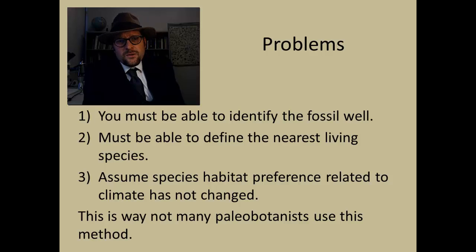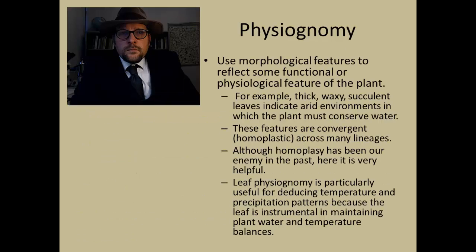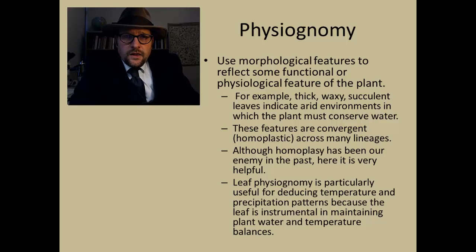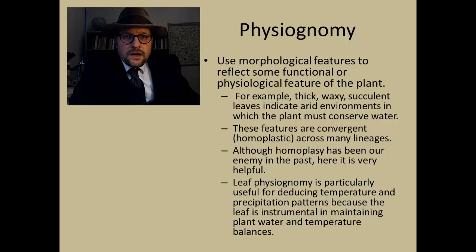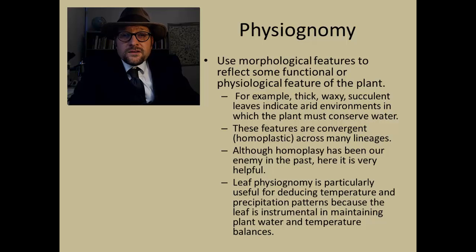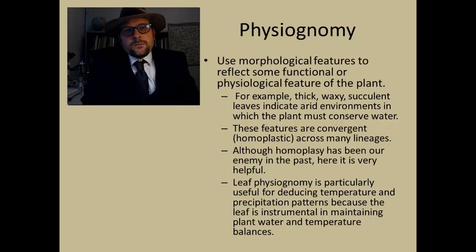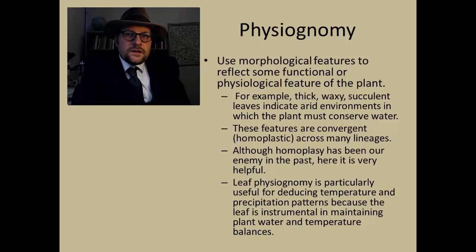Since its proposal over 100 years ago, not many paleontologists use this model anymore. Modern paleontologists have rather been looking at something called physiognomy. Physiognomy uses morphological features that reflect some functional or physiological feature of the plant. For example, many plants living in desert environments will have thick waxy succulent leaves to help the plant conserve water. Finding a fossil plant with these features would indicate a dry desert environment.